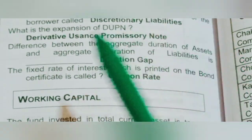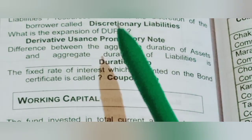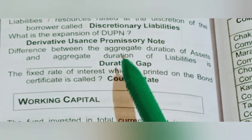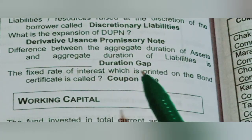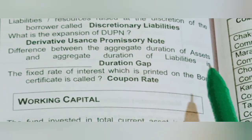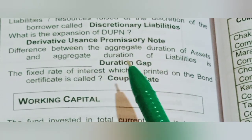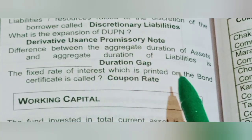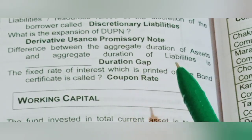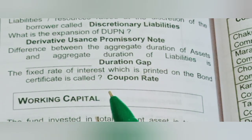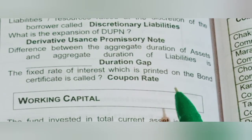Liabilities or resources raised at the discretion of the borrower are called discretionary liabilities. What is the expansion of DUPN? Answer: Derivative Usance Promissory Note. Difference between the aggregate duration of assets and aggregate duration of liabilities is called duration gap. The fixed rate of interest which is printed on the bond certificate is called the coupon rate.